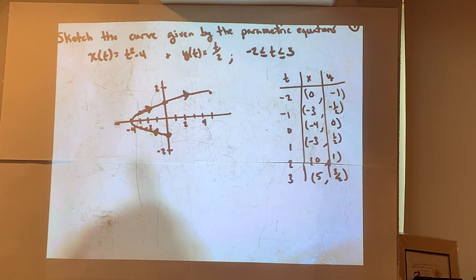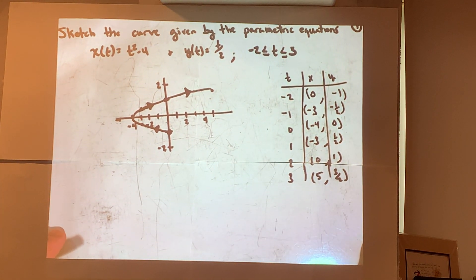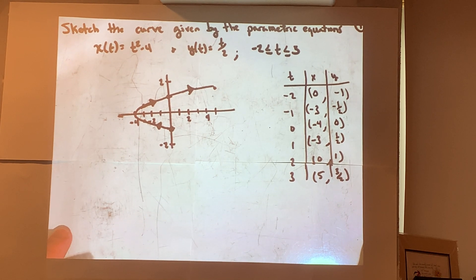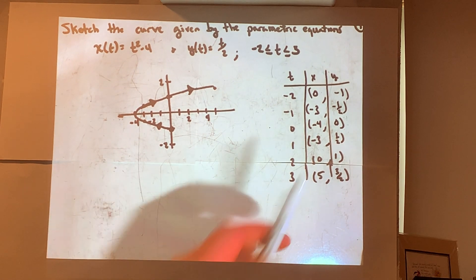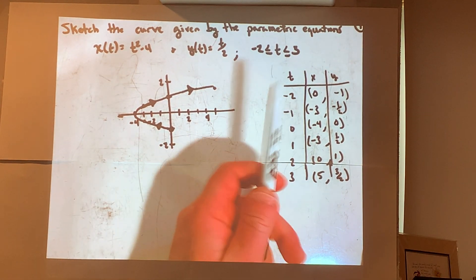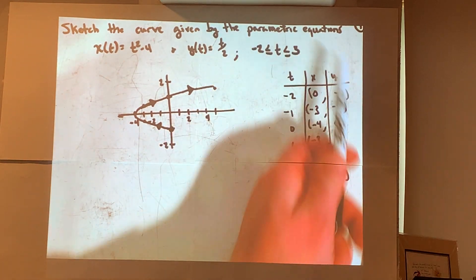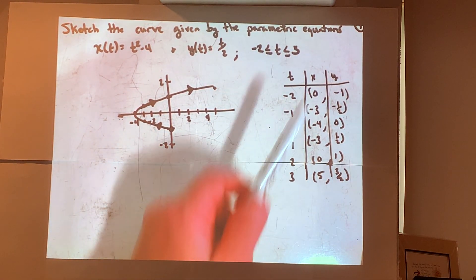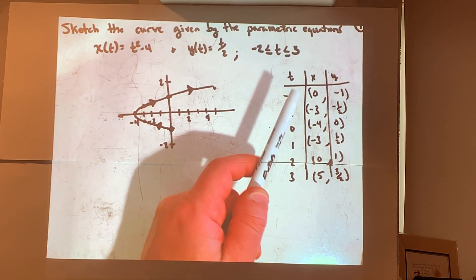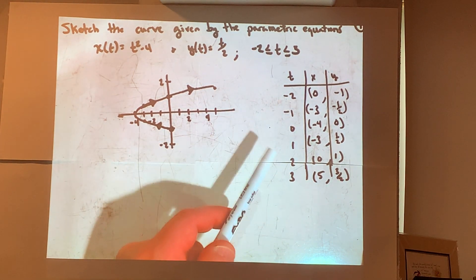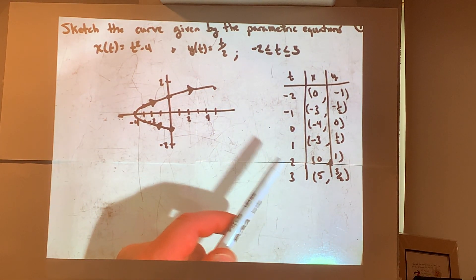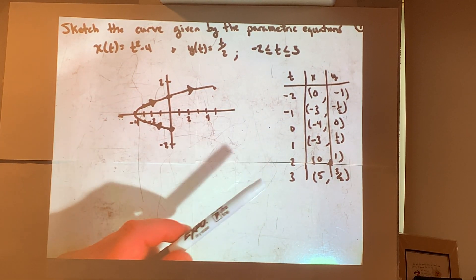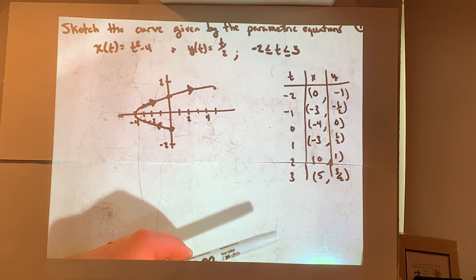Hopefully that helps make sense of what it means to sketch a set of parametric equations. We utilize our parameter — most times it will be given. If not, you can pick values of t and keep increasing those values so you can see the orientation of the plane curve.